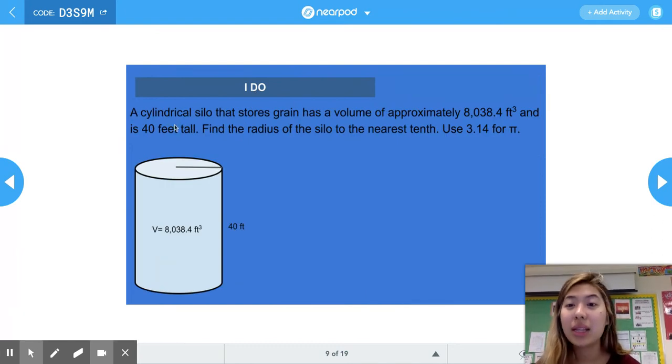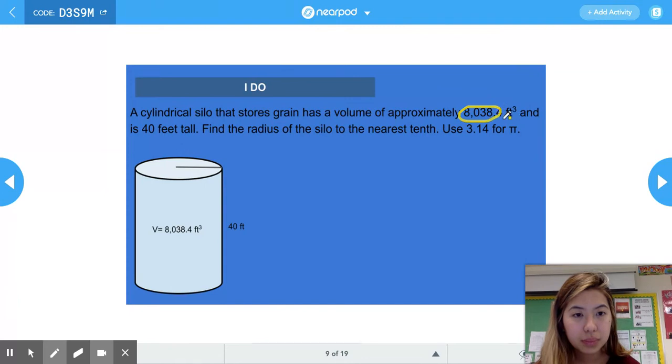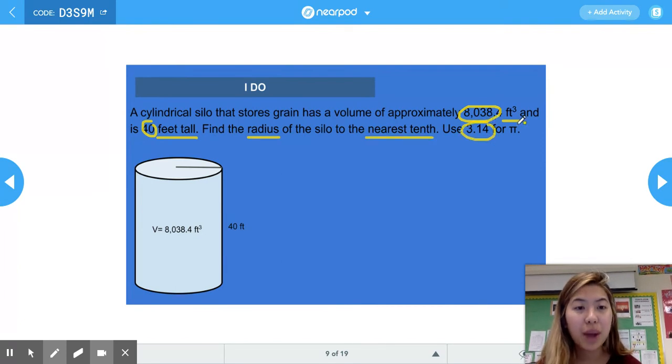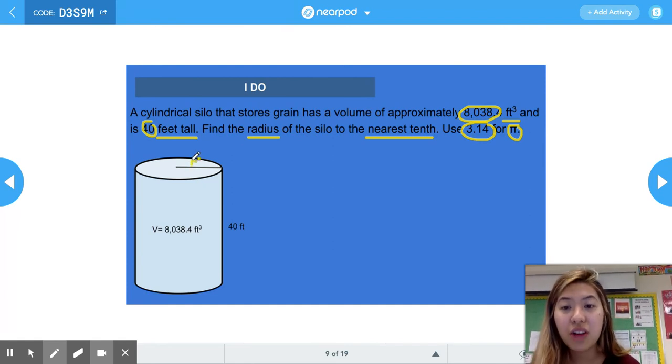This I do problem reads: a cylindrical silo that stores grain has a volume of approximately 8,038.4 feet cubed and is 40 feet tall. Find the radius of the silo to the nearest tenth. We have to use 3.14 for π. In this case we're working backwards, because instead of trying to find the volume, we're given the volume and we have to find the radius. We start by writing that same volume formula for cylinders, which is V = πr²h.